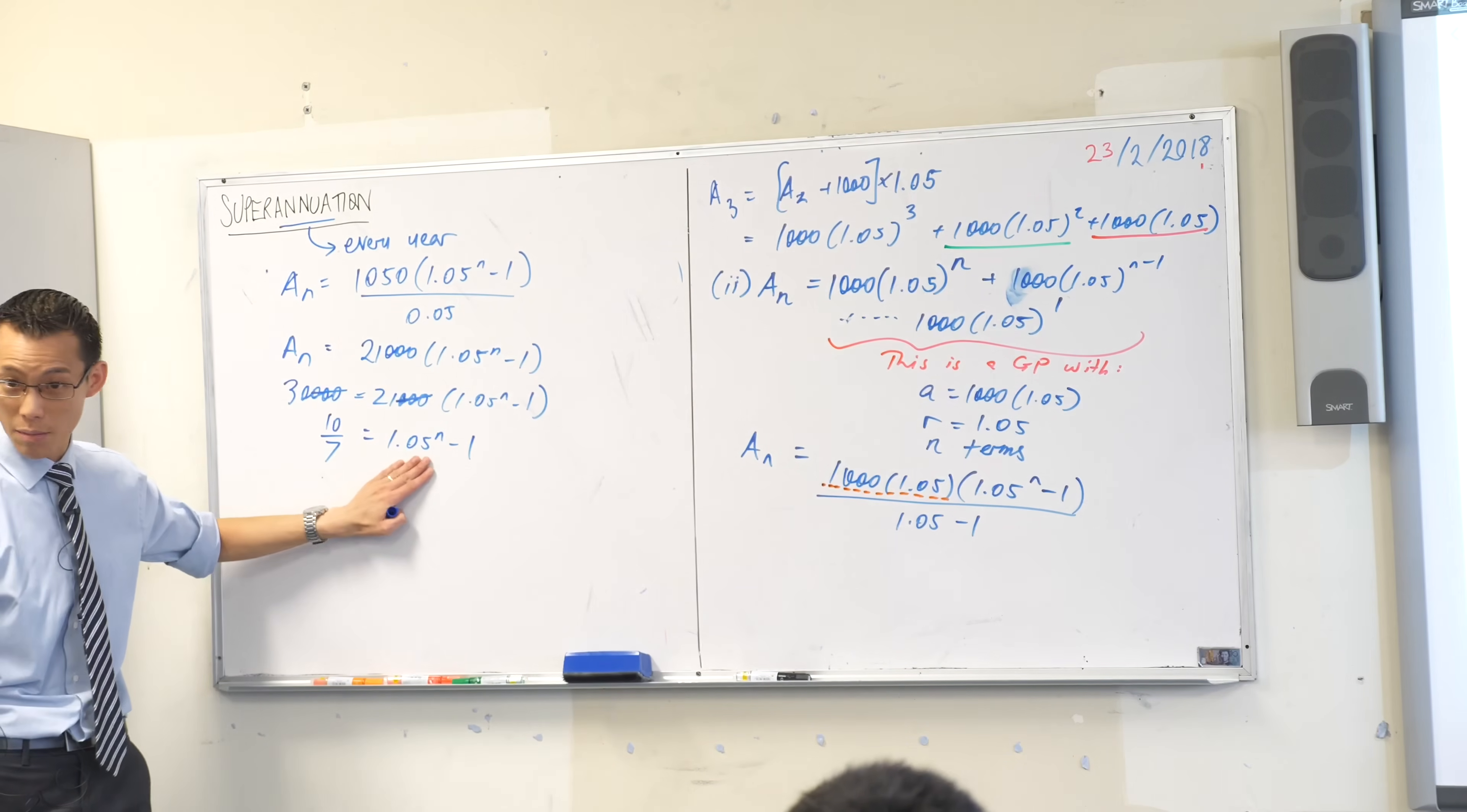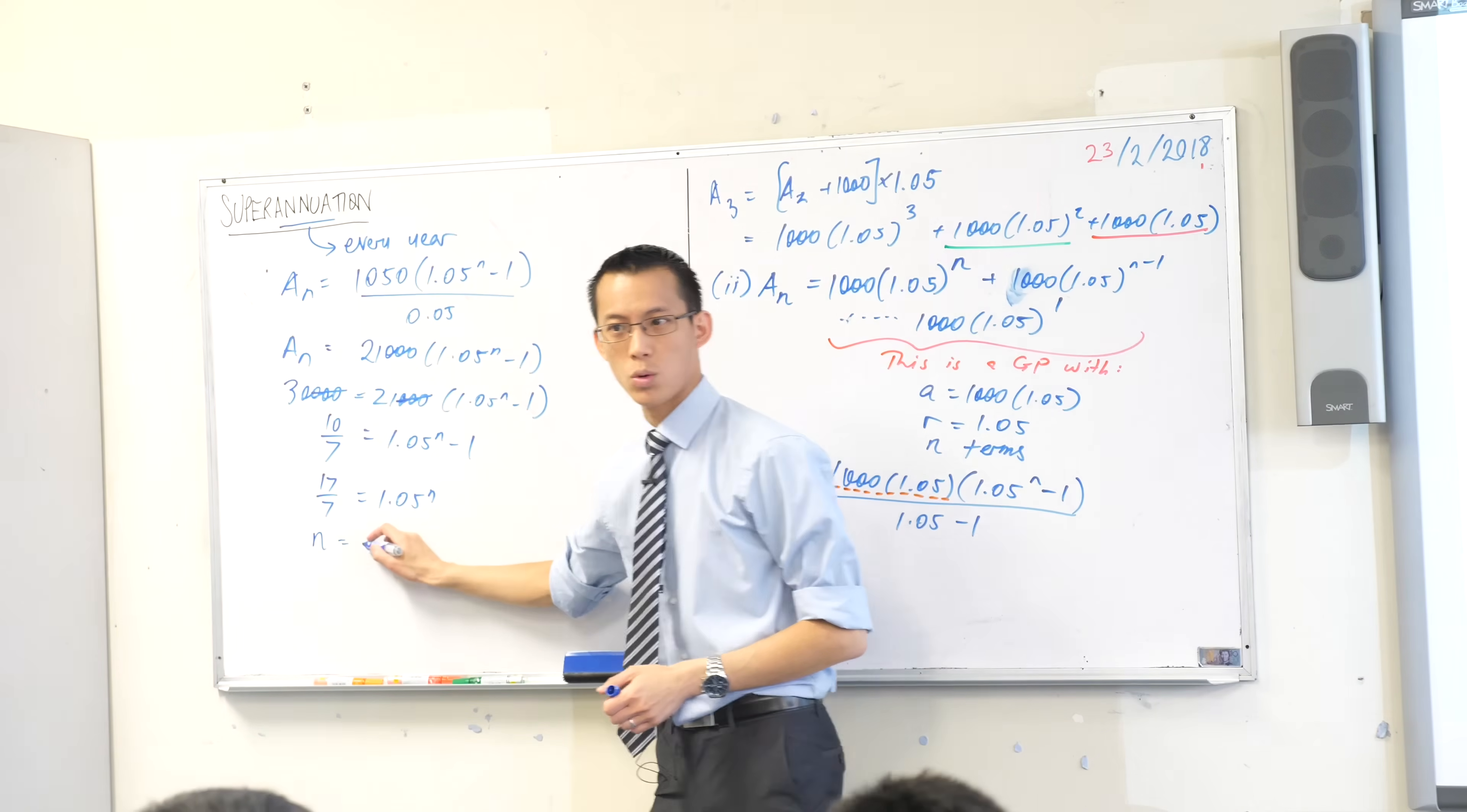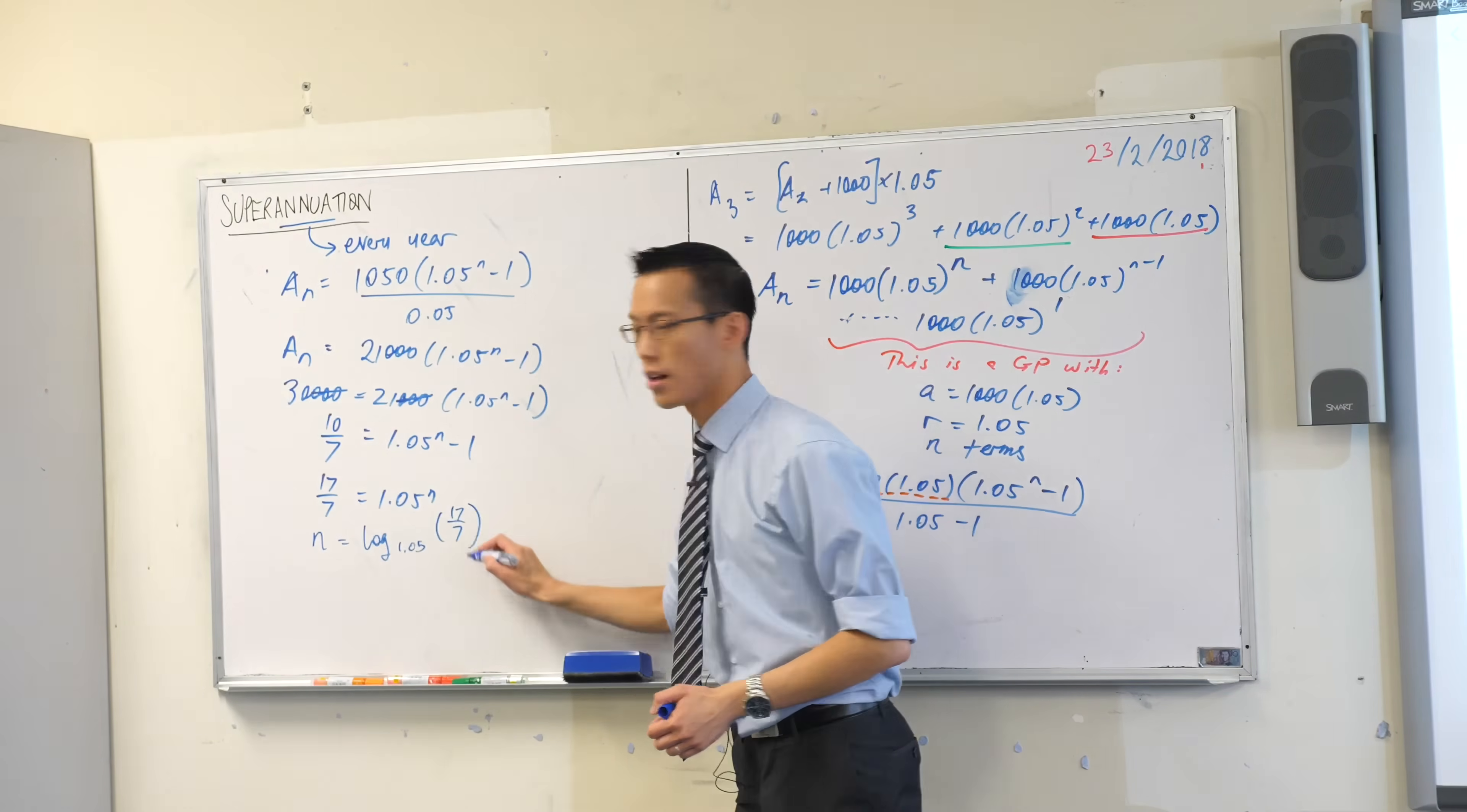I want to get this guy, make him the subject. So I guess I will add one to both sides, which I think makes it this. What do I do with a thing like this? I'm going to have to use logs at this point to get to that power. So I guess I would write n equals log base, which one's the base again? The base in this equation is the base from the previous one. So that's 1.05 down the bottom and it's 17 on 7 up the top.